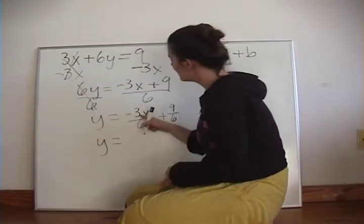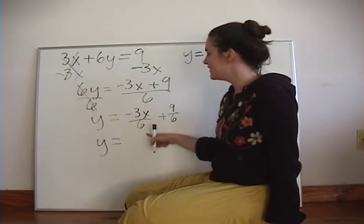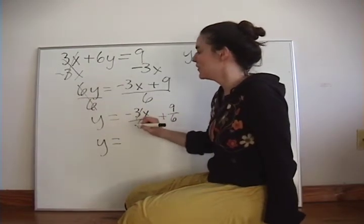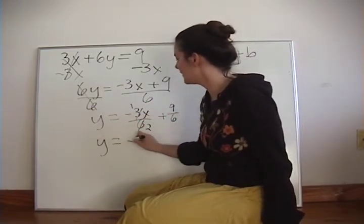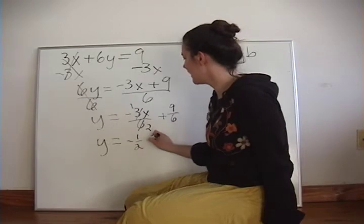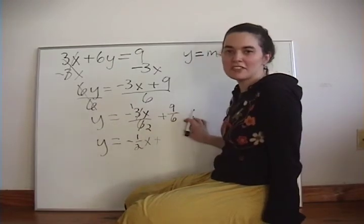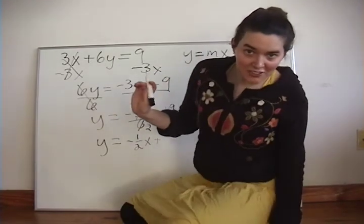And then 3 over 6 simplifies to 1 over 2, so we've got negative 1 half x plus 9 over 6. So, how many times does 3 go into 9?